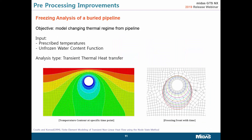Now it's time to start the exercise. I'm using a paper by Kotz and Konrad — the reference is given at the bottom. The goal is to demonstrate the basics of thermal analysis: basic input, using conduction as the heat transfer method, prescribing temperatures, applying the unfrozen water content function, and running a transient thermal heat transfer analysis. At the end, we will see the freezing propagation direction, which is possible to do with Midas GTS.